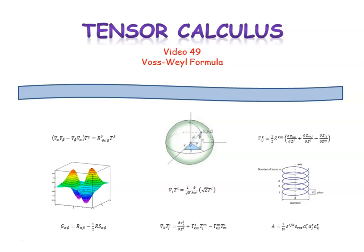This is video number 49 in our series on tensor calculus. In this video, we'll derive the Voss-Weill formula. This formula will provide us with a very useful alternative to the way in which we evaluate both the divergence and the Laplacian.